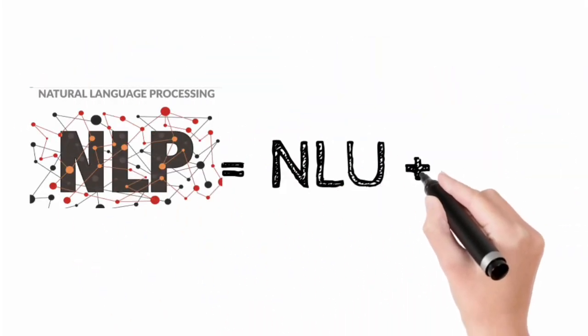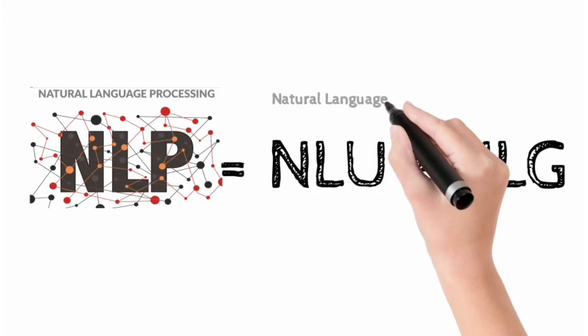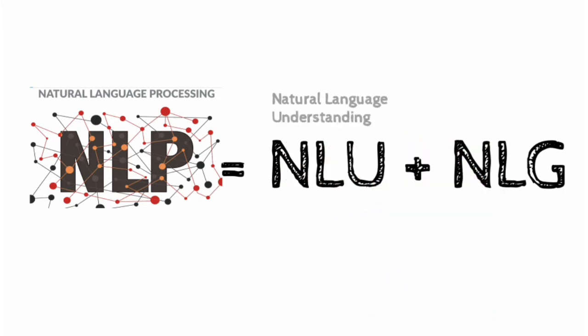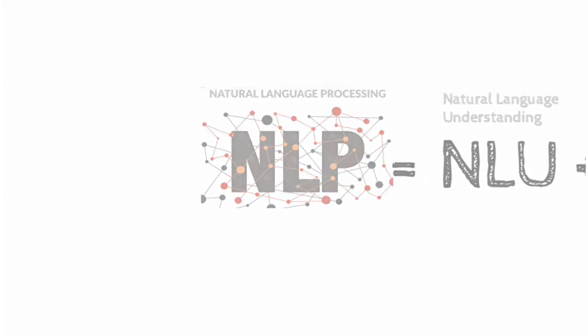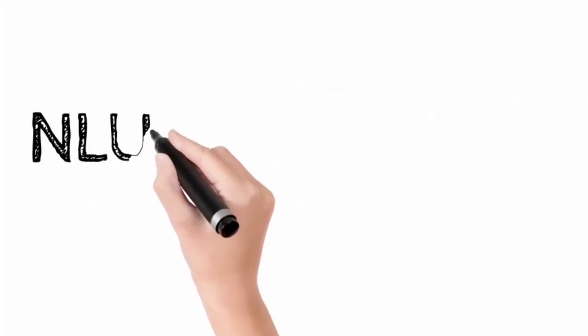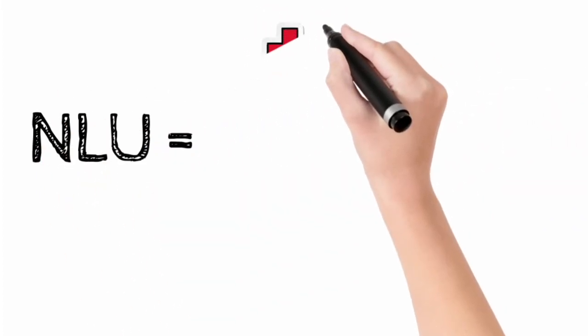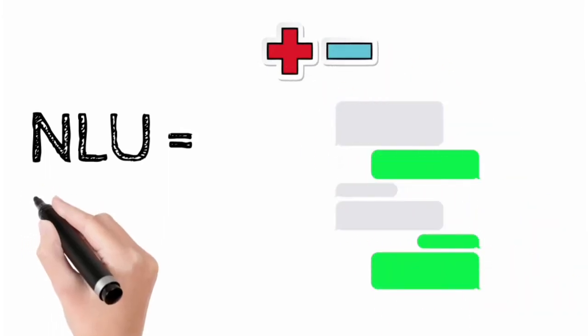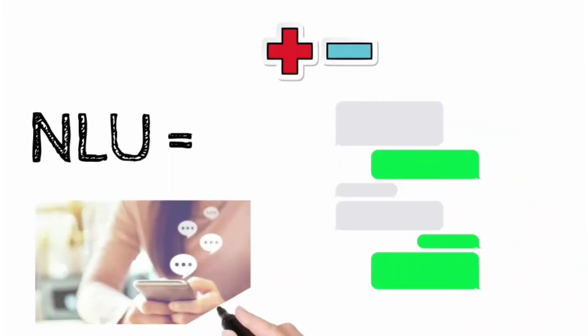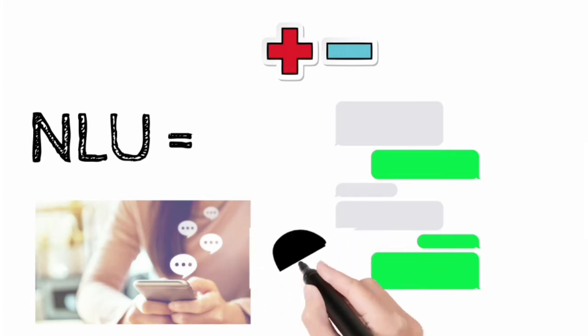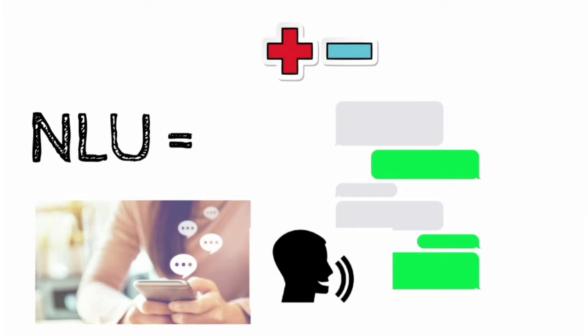NLP is nothing but the combination of NLU plus NLG. NLU means Natural Language Understanding and NLG means Natural Language Generation. In Natural Language Understanding, it extracts positive and negative sentiments from the text. It can understand if a person is texting or by voice, telling the machine something negative or something positive.